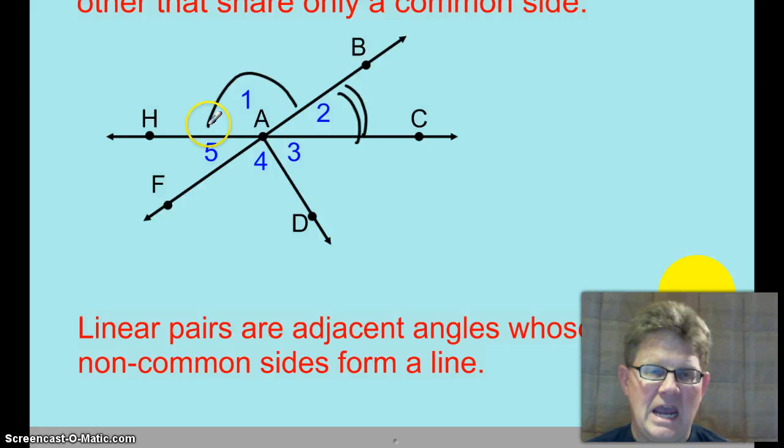Notice that ray AH and ray AC, they form a line. I think that's why they're called a linear pair. It's because they form a line. All right.